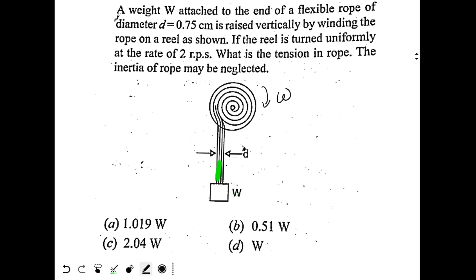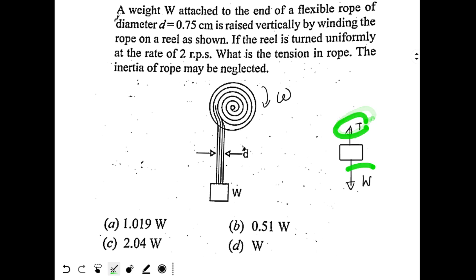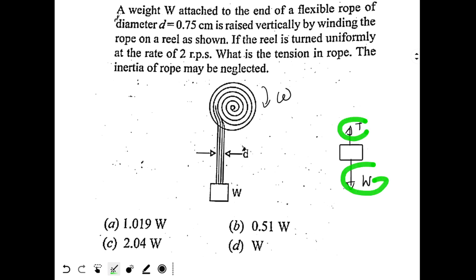Looking at the free body diagram of the block: tension acts upwards and the weight W acts downwards. The question is whether tension equals W, is more than W, or less than W. To determine this, we need to know the acceleration of the block. If acceleration is zero, then T equals W.